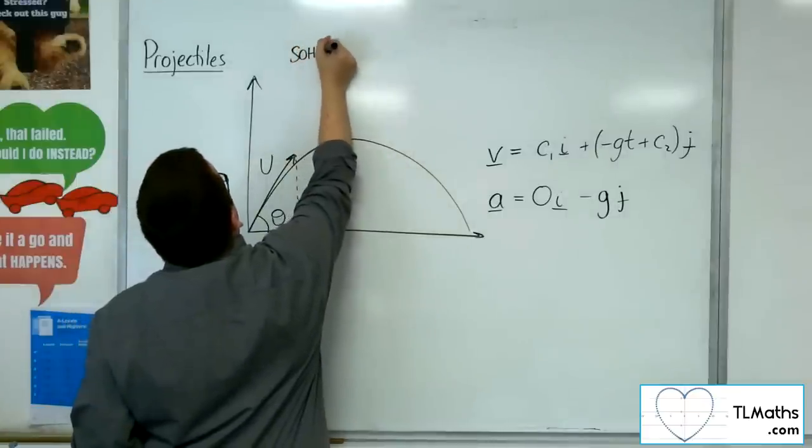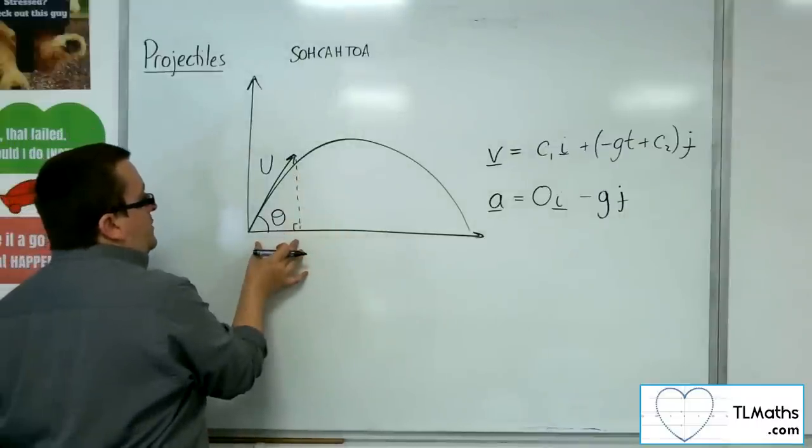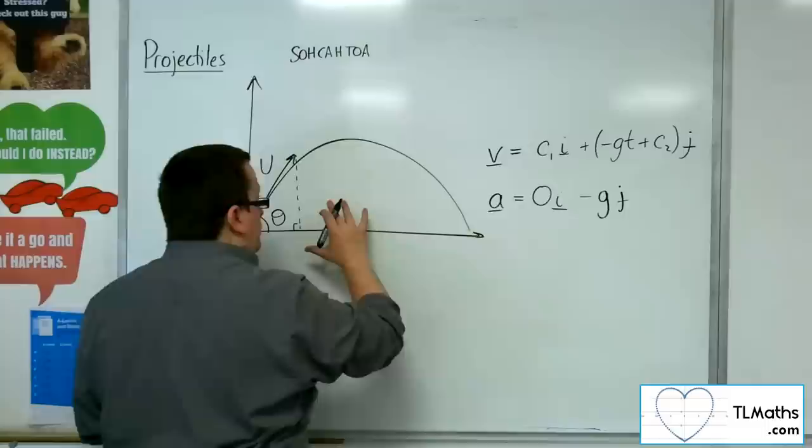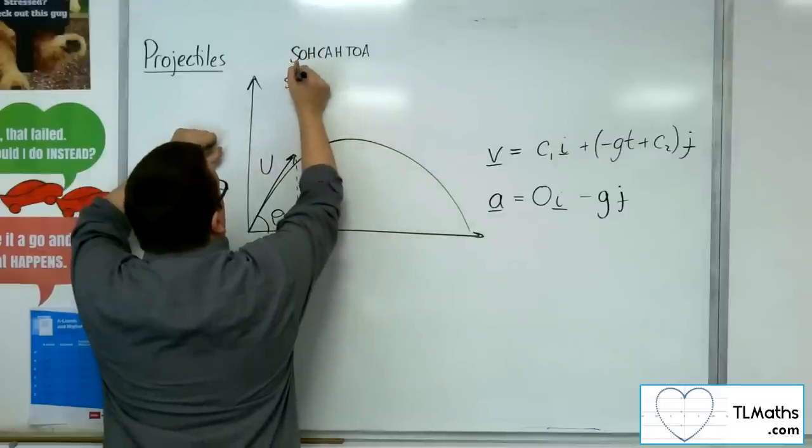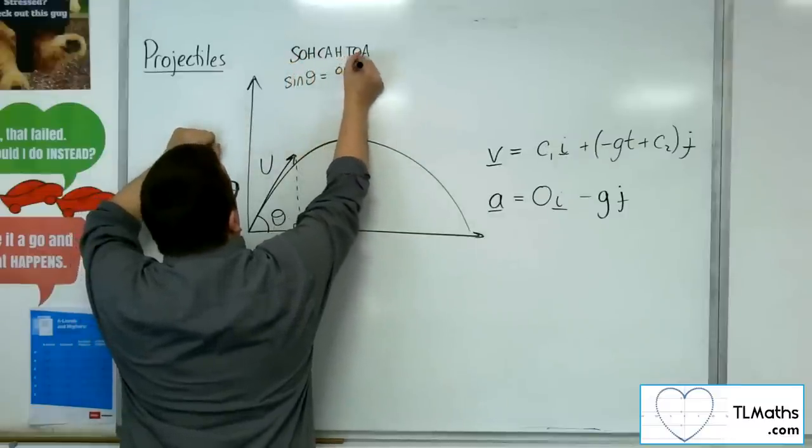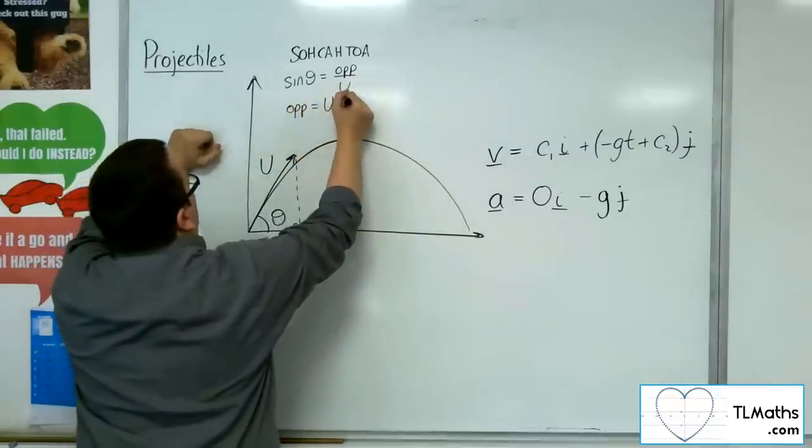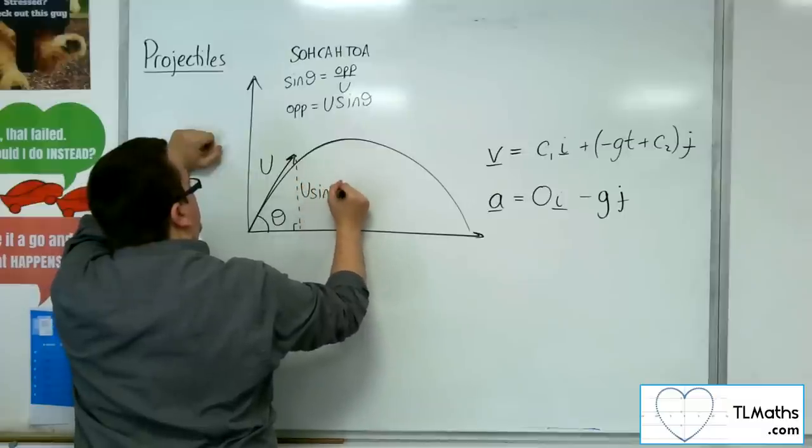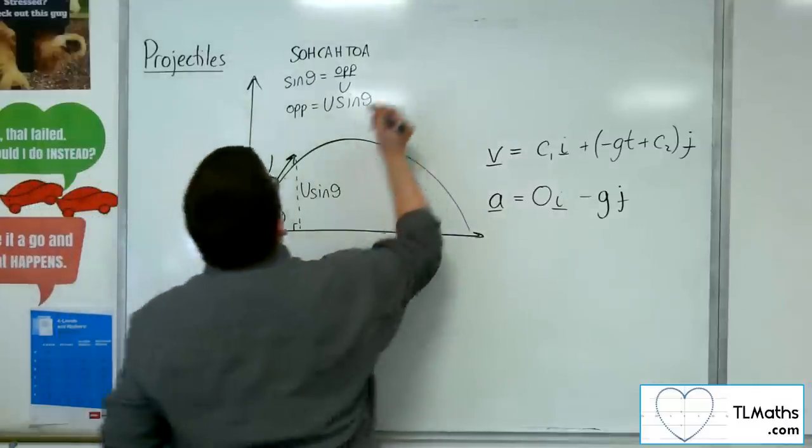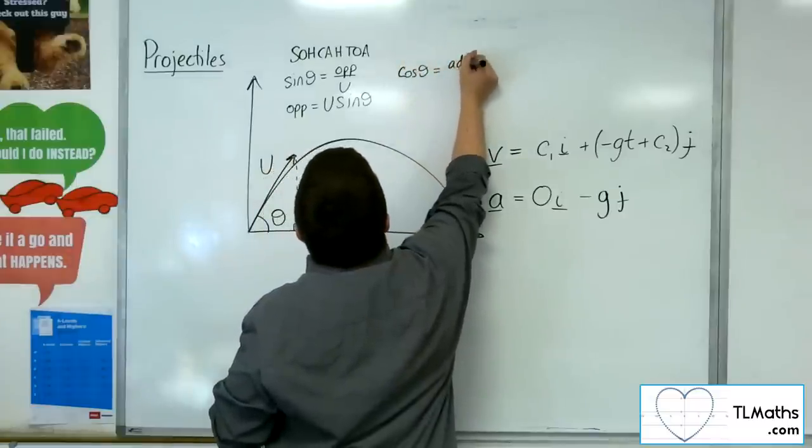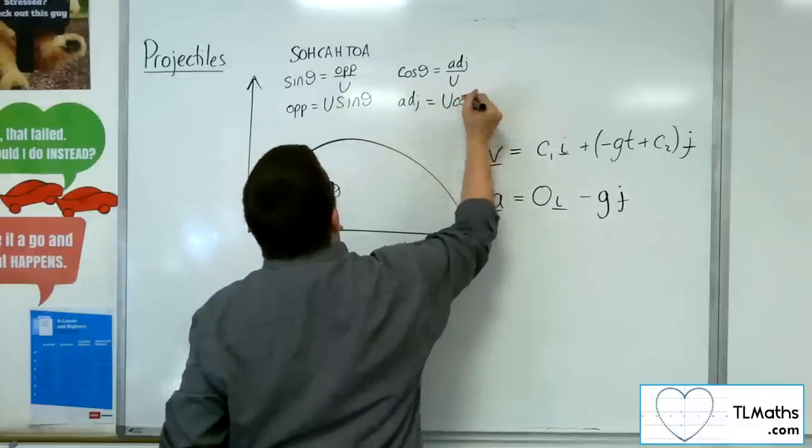So, SOHCAHTOA would be telling me that I've got the opposite and the adjacent. So, if I've got the opposite side and I've got the hypotenuse, then I'm looking at sine. So sine of the angle is equal to the opposite side over u, the hypotenuse. So the opposite side will be u sine theta. And you will have guessed it. This will be u cosine theta for much the same reason, because cosine of theta is equal to the adjacent over the hypotenuse. And so the adjacent is u cosine theta.